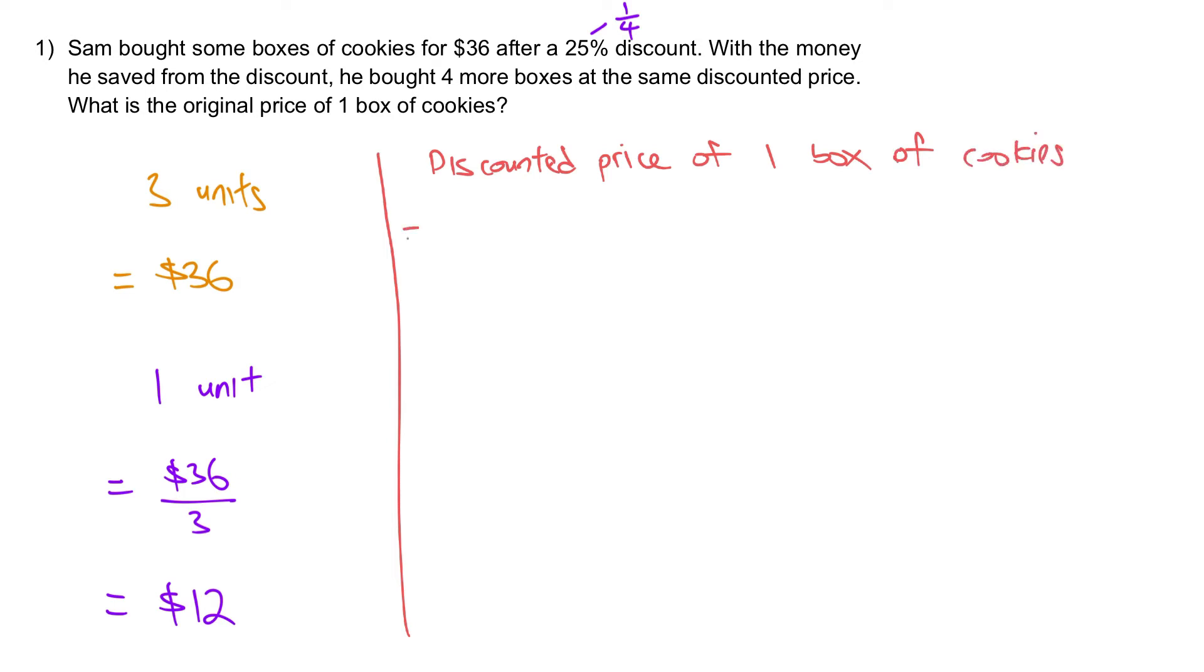So let me write it down, this discounted price of one box of cookies. Okay, so $12 for four boxes. Therefore, to figure out the cost of one box of cookies after discount. So the discounted price for one box of cookies is $3.